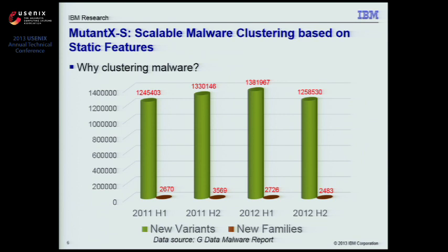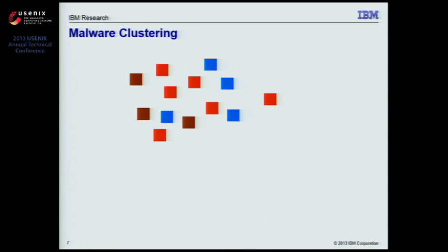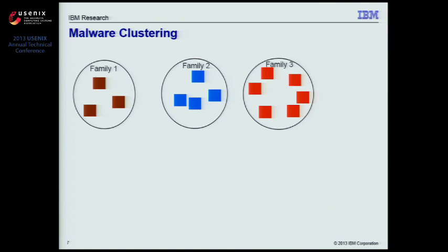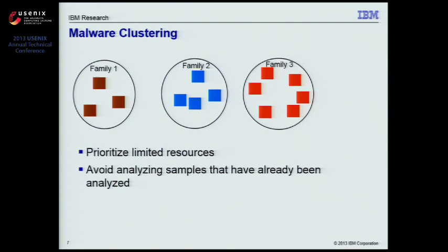Because of this great similarity shared by malware variants, an efficient way to cluster similar malware variants into families provides several benefits. First, it helps prioritize limited resources and allows malware analysts to focus on more representative and novel malware samples rather than wasting time analyzing something that has already been analyzed.